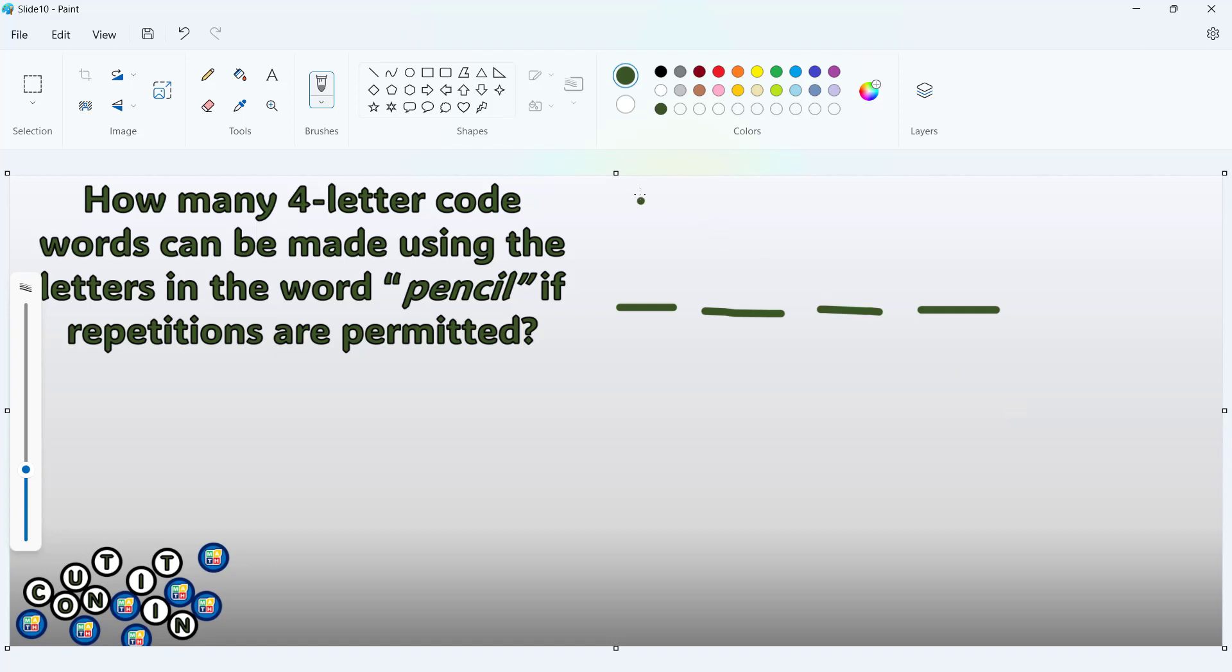If we are using P and since repetitions are permitted, we can also use P until the last placement. This would mean that for the first placement, we can use all 6 letters: P-E-N-C-I-L, the letters of the word pencil.